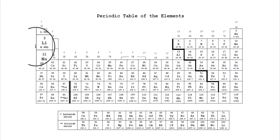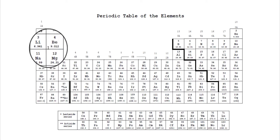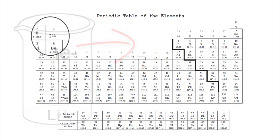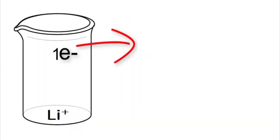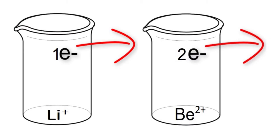For example, lithium and beryllium, when losing one electron and two electrons respectively, will end up with two electrons in their outermost shell.